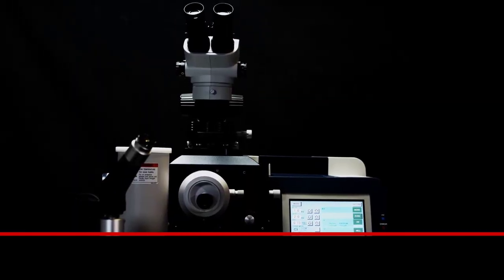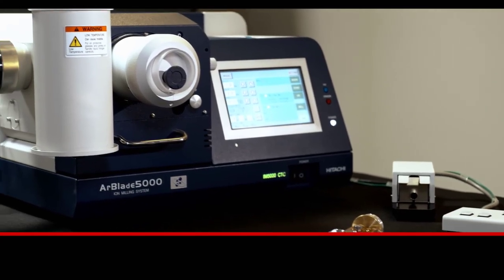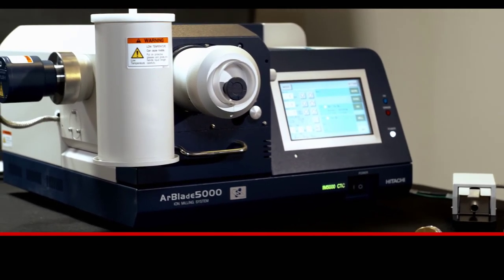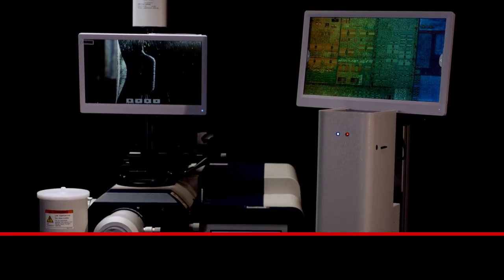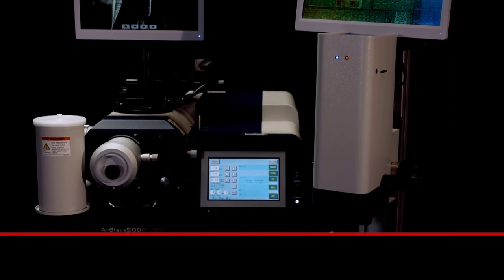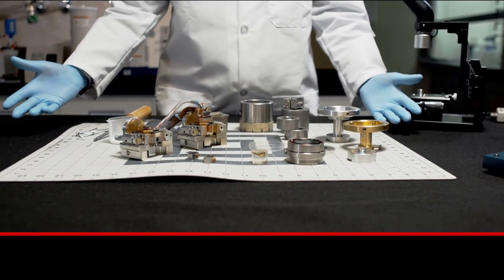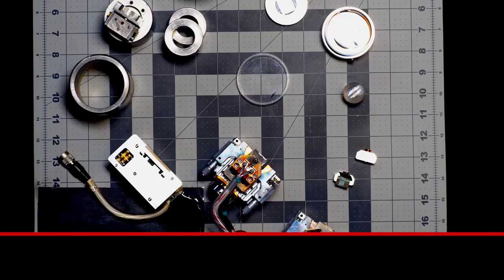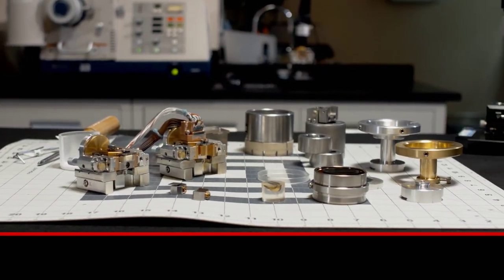The ArBlade 5000 continues to break new ground with unmatched material removal of 1000 microns per hour and wide cross-section milling of up to 8mm in width. Along with its accessories for mechanical preparation and imaging, there is no limit in system configuration for a solution to simplify specimen preparation.